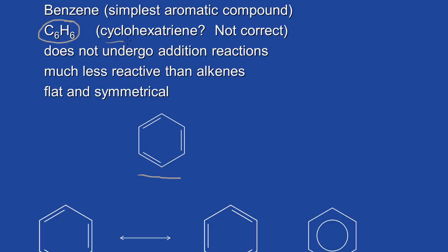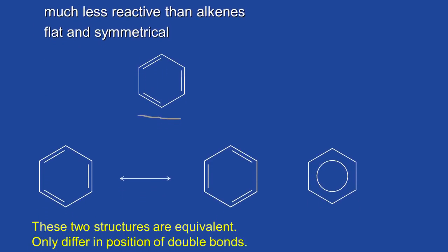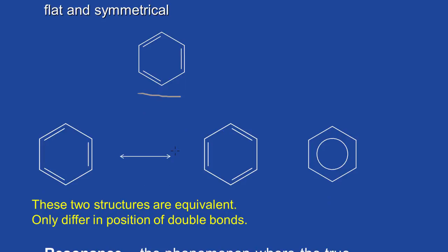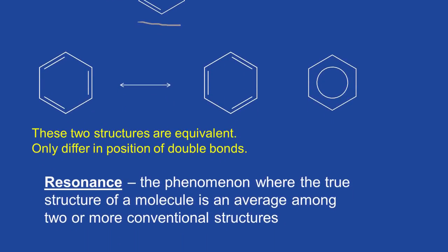Benzene looks like a ring of six carbons that alternates between double and single bonds, so you might think the name would be cyclohexatriene — but it is not, because this is not a ring of alternating single and double bonds. We can actually draw two equivalent structures; the only difference between them is the location of the electrons. They only differ in the position of the so-called double bonds, so these are resonance structures. The true structure is an average of these two resonance structures.